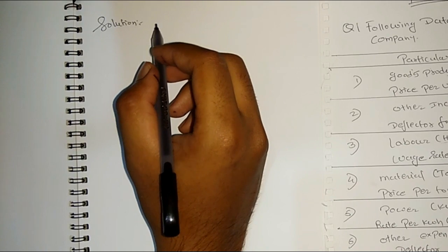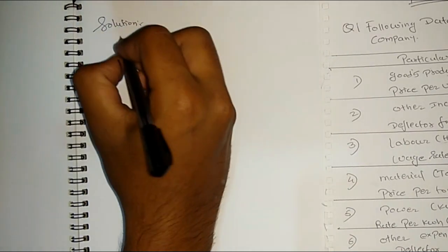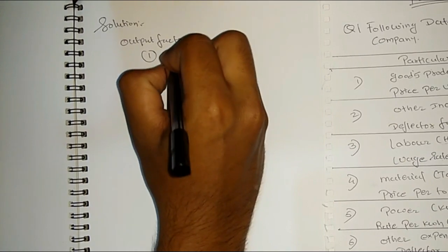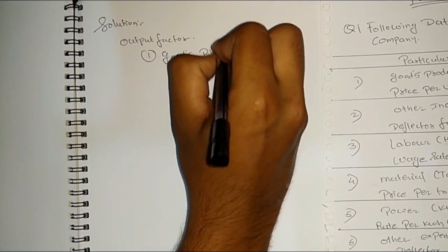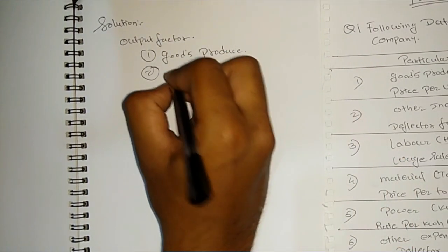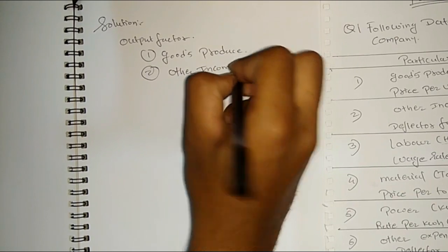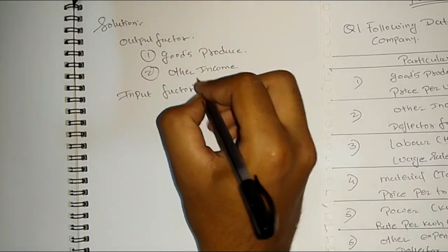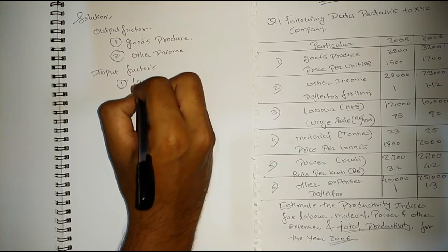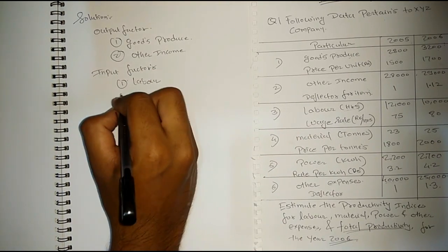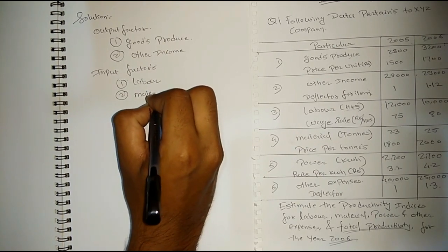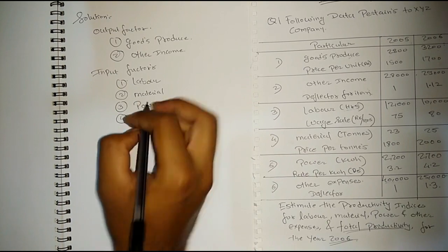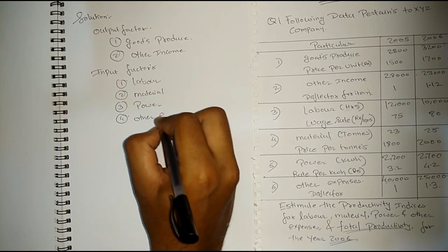First of all, differentiate the output factors and the input factors. In this question, the output factors are: first, good produce; and second, other incomes. The input factors are: first, labor; second, material; third, power; and fourth, other expenses.